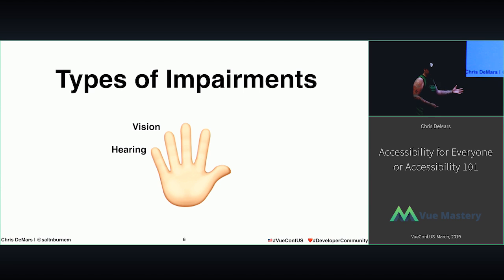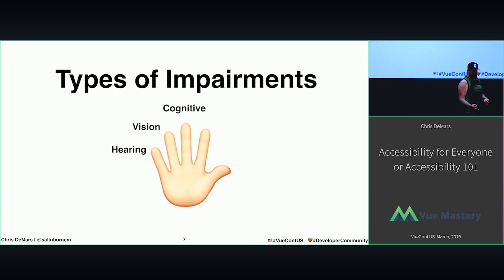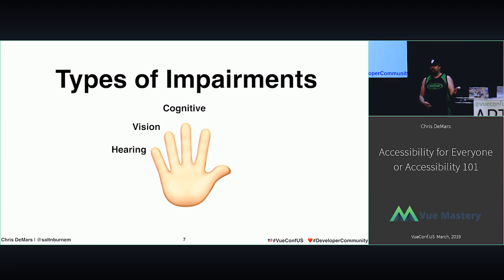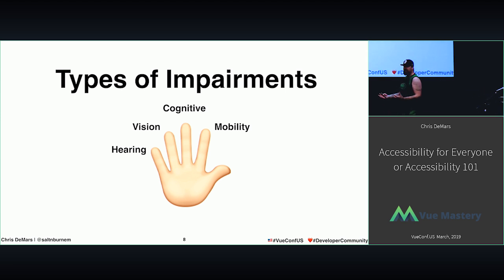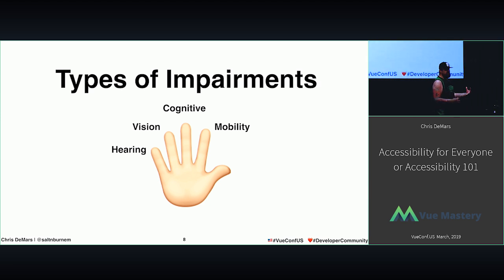We have vision disabilities — color vision deficiency or color blindness, field of vision, things like that. We also have cognitive disabilities that we're trying to account for: math comprehension, reading comprehension. And mobility disabilities — cerebral palsy, arthritis, MS. These types of mobility impairments are what we're trying to target as well.